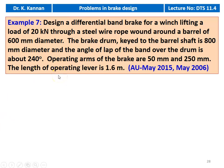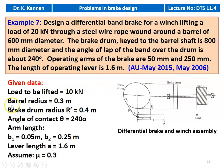The next question, example number 7, appeared in May 2015 and May 2006 question papers. Design a differential band brake for a winch lifting a load of 20 kilo Newton through a steel wire rope wound around a barrel of 600 millimeter diameter. The brake drum keyed to the barrel shaft is 800 millimeter diameter, and the angle of lap of the band over the drum is 240 degrees. The operating arms of the brake are 50 millimeter and 250 millimeter, and the length of the operating lever is 1.6 meter. Given data: load 20 kilo Newton, barrel radius 0.3 meter, brake drum radius R equal to 0.4 meter, angle of contact theta equal to 240 degrees, arm lengths B1 equal to 0.05 meter, B2 equal to 0.25 meter, lever length A equal to 1.6 meter, coefficient of friction assumed mu equal to 0.3.